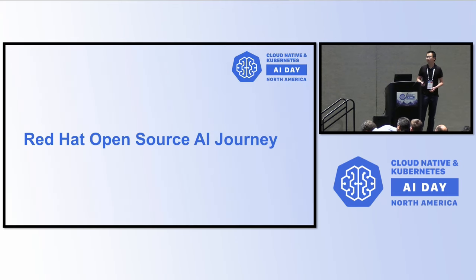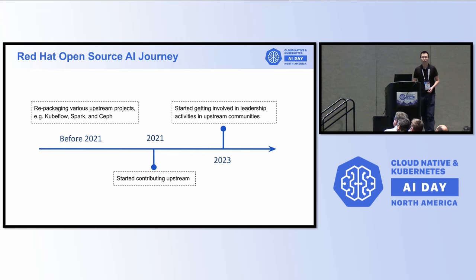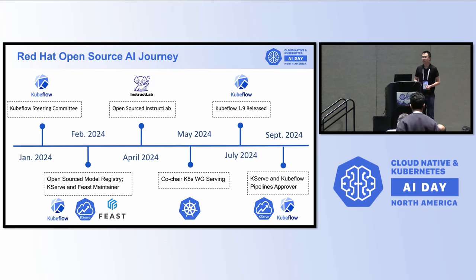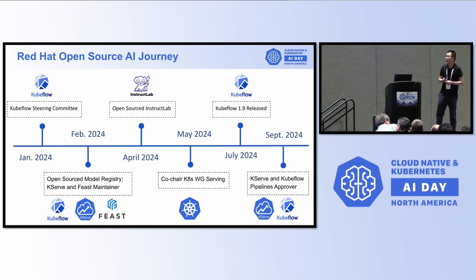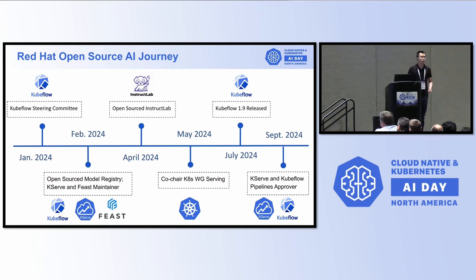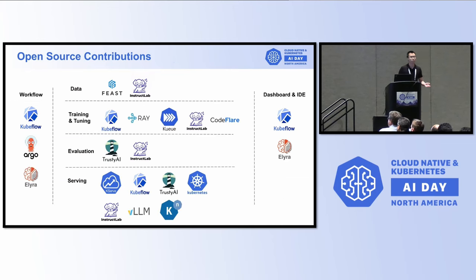Let me share a little bit about our open source AI journey. Before 2021, we were repackaging a lot of upstream projects, and then we started contributing to the upstream code base and getting involved in leadership activities. Since early this year, we've proven to be a leader in the cloud native AI community. For example, we've become the steering committee for the Kubeflow community and co-chair for Kubernetes working group serving, and also became maintainer for KServe, Feast, and Kubeflow Pipelines. We also open sourced InstructLab and Model Registry, which I'll talk about in more detail.